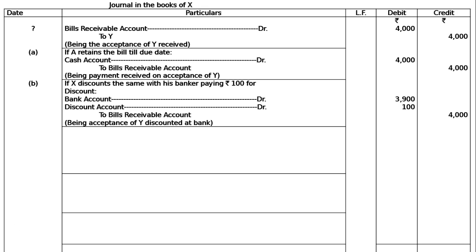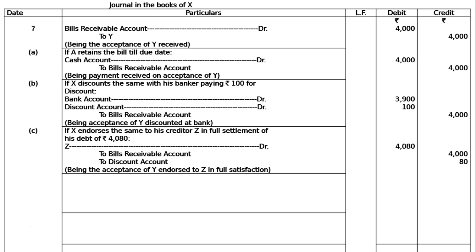In part C: if X endorses the bill to his creditor Z in full settlement of his debt of Rs. 4080. The entry is Z debited Rs. 4080, to bills receivable account Rs. 4000, to discount account Rs. 80, being the acceptance of Y endorsed to Z in full satisfaction.